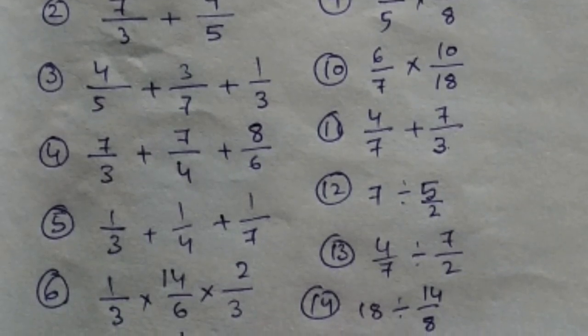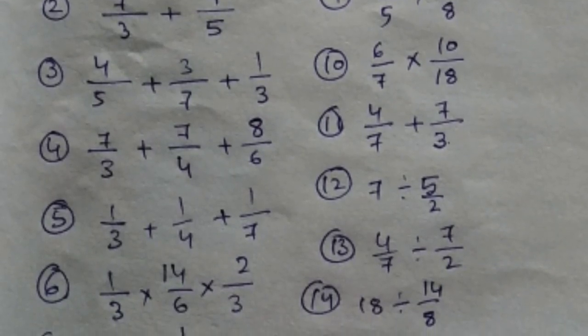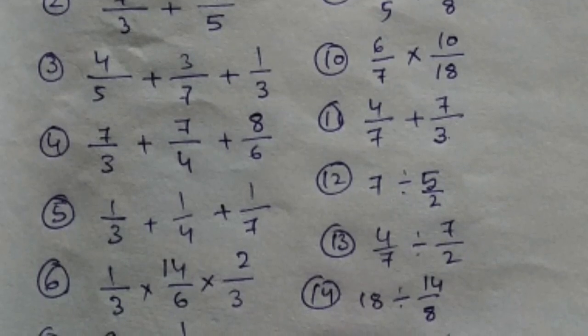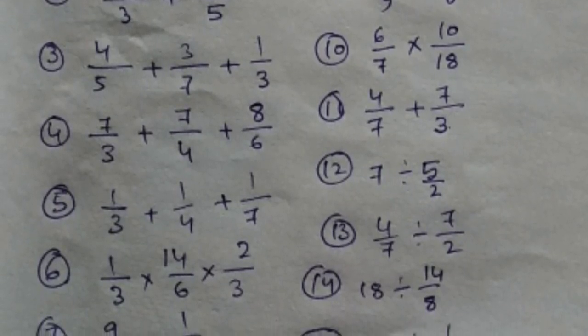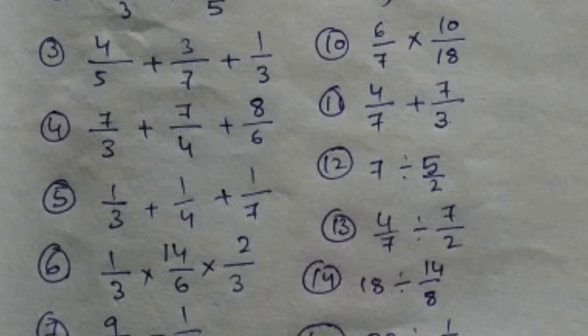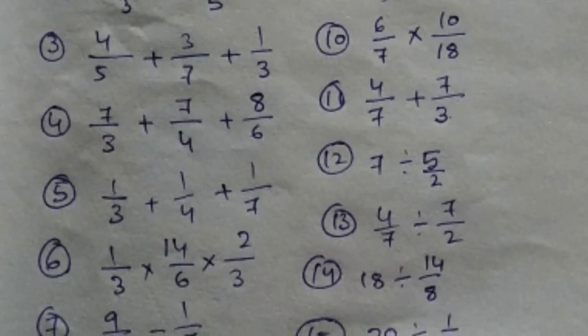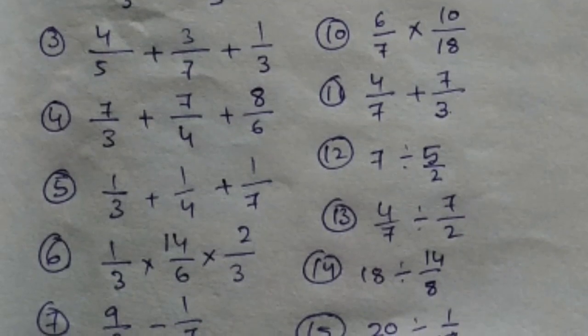Number 12: 7 divided by 5 by 2. Number 13: 4 by 7 divided by 7 by 2. Now 14: 18 divided by 14 by 8. Now 15: 20 divided by 1 by 7.